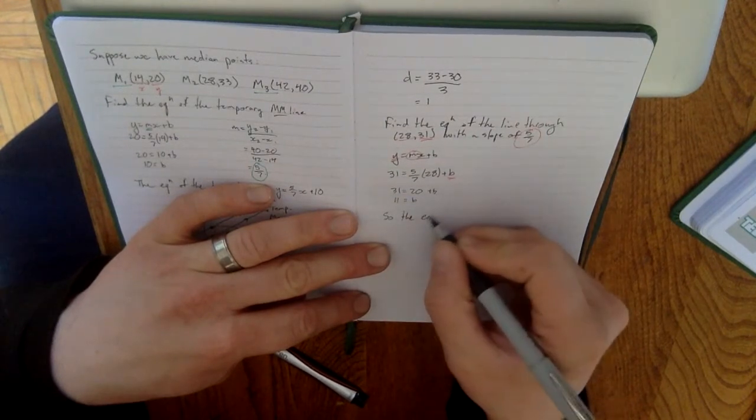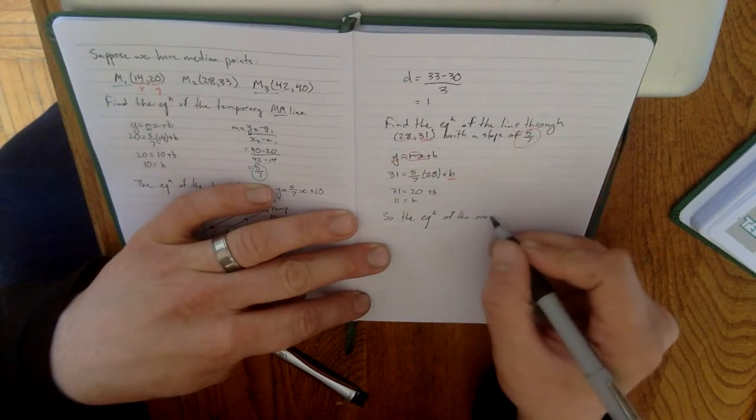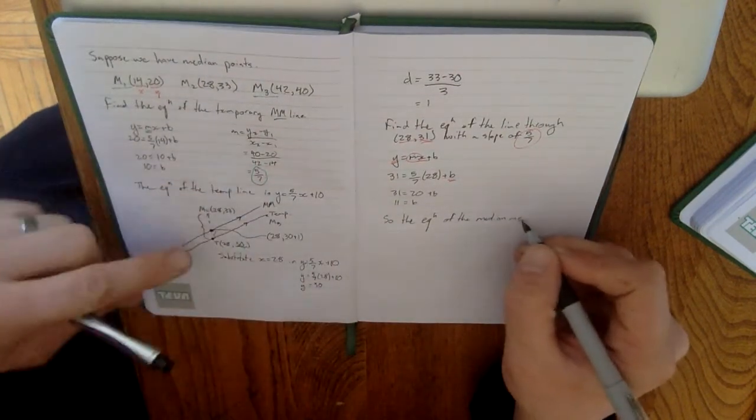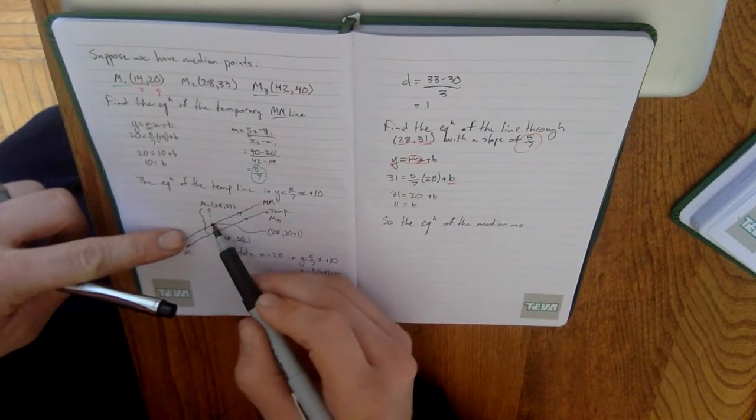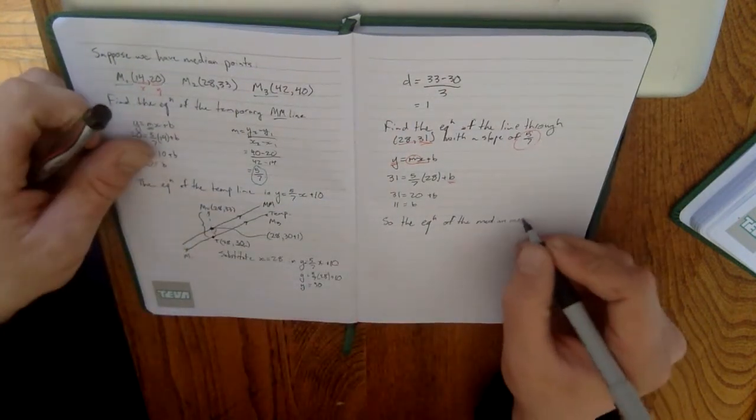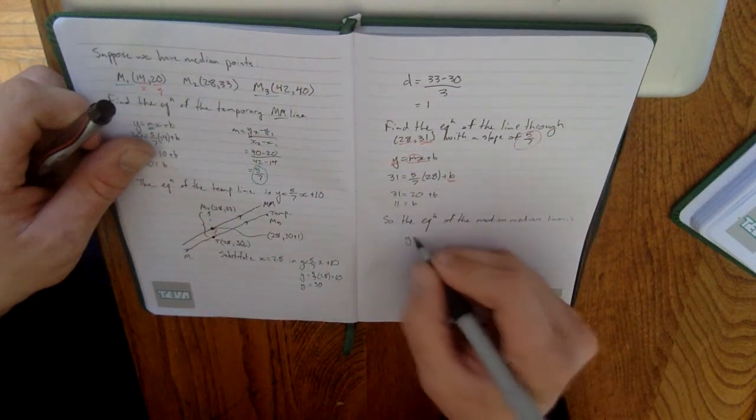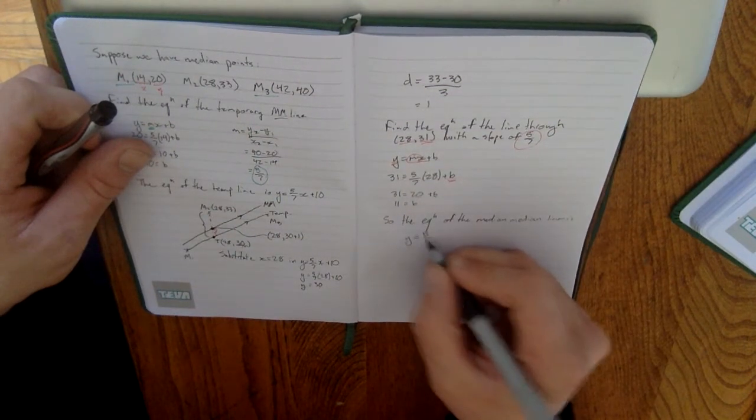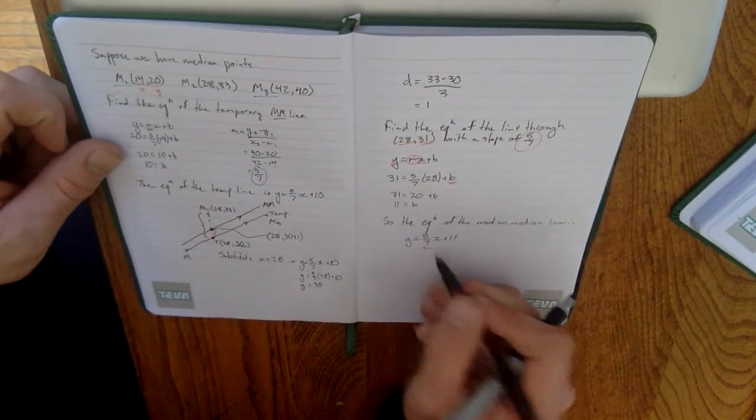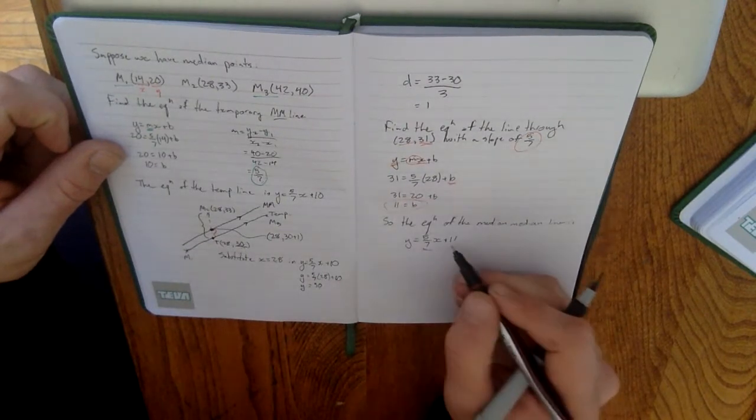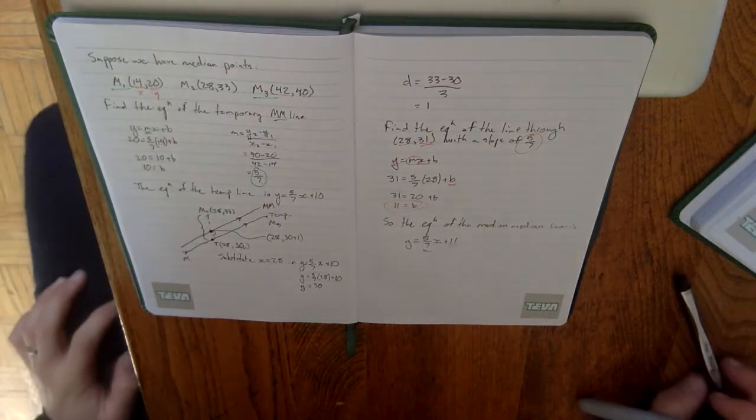So, the equation of the median-median line, and that's this line over here that connects through this point that we just found with the same slope, is y equals 5 over 7 x plus 11. That's our original slope that we found. And finally, the y-intercept that we found at the end. And that's how you algebraically find the equation of a median-median line.